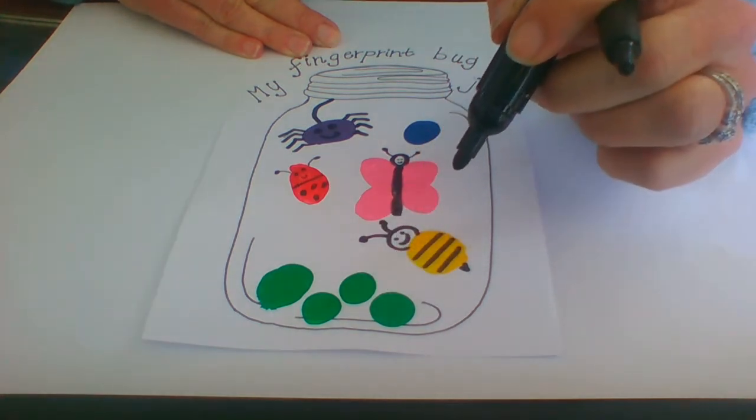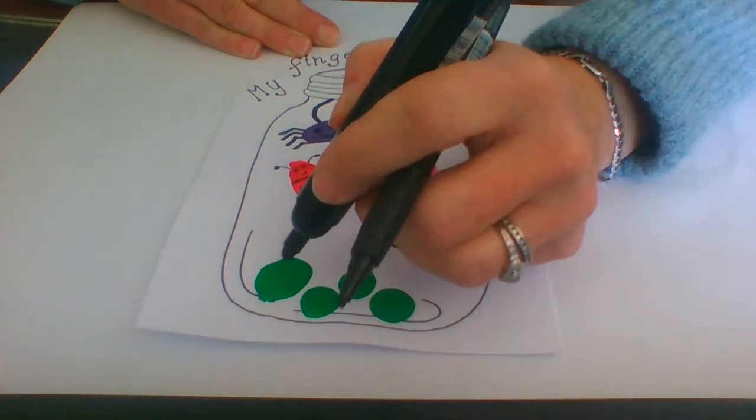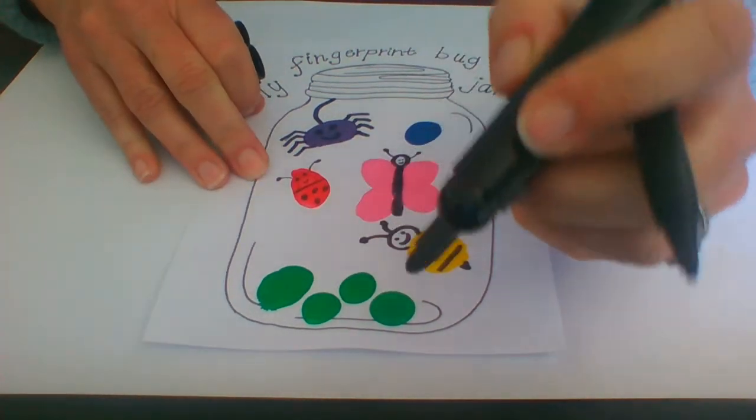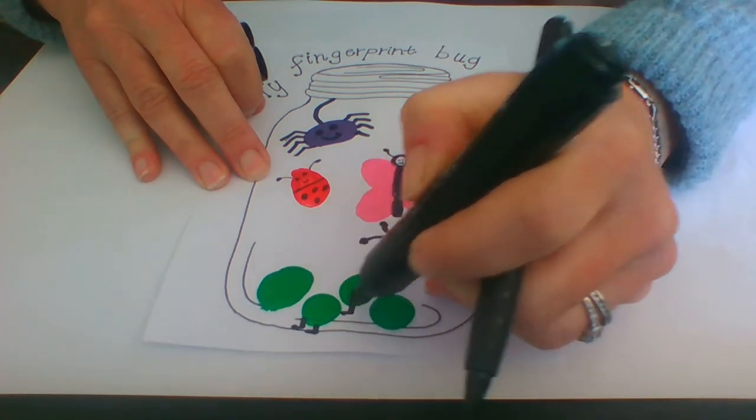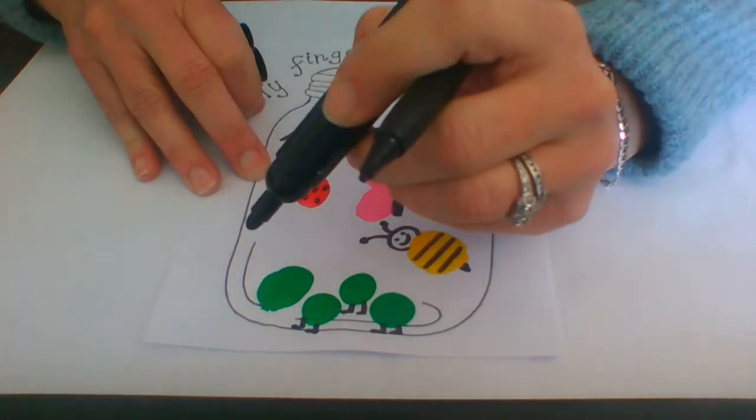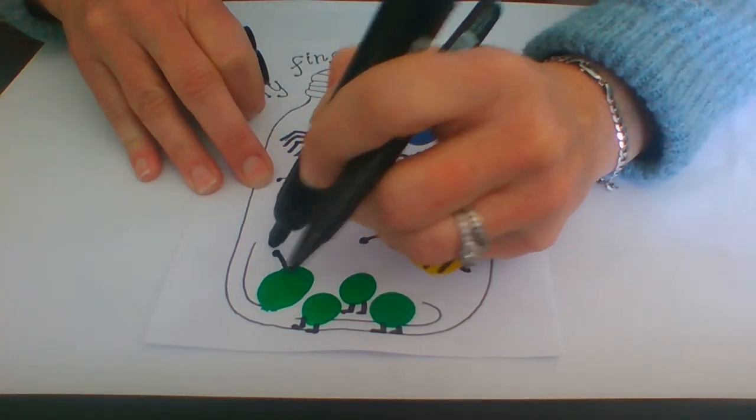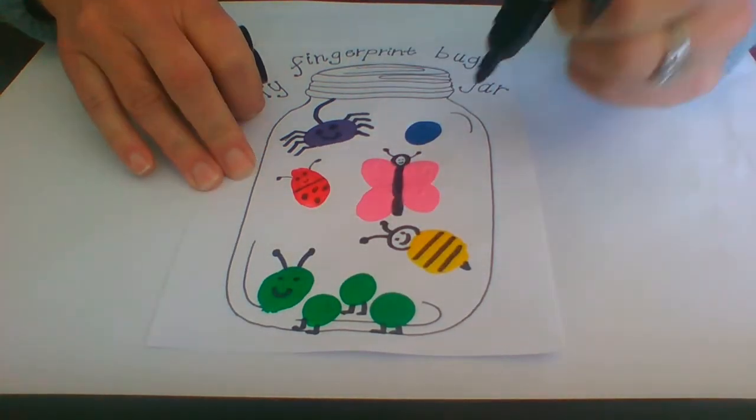This guy down here is green. What do you think he is? He's a bit like, he represents my classroom. So we can make him into a green caterpillar. So we can do the little legs. That's the body. And then I'm going to do little feelers here. And then little eyes. Look at my little caterpillar.